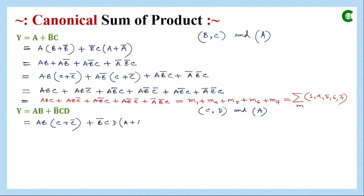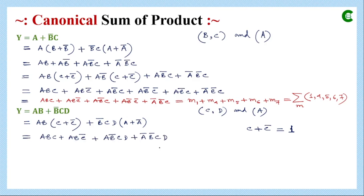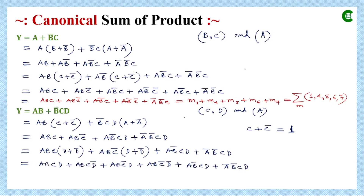For the first term we multiply by (C plus C-complement), and for the second term we multiply by (A plus A-complement). We do this because A, B, C, D are all Boolean variables, and for any Boolean variable, a variable plus its complement equals one — a basic law of boolean algebra — so multiplying by (X plus X-bar) doesn't change the value. After completing the multiplications, the third and fourth terms already have all four variables A, B, C, D and are minterms, so we retain them. The first and second terms are still missing D, so we apply the third step again.